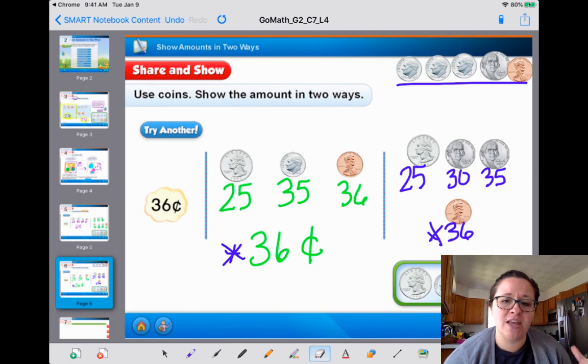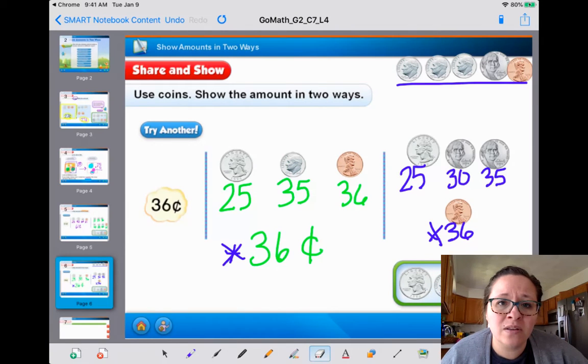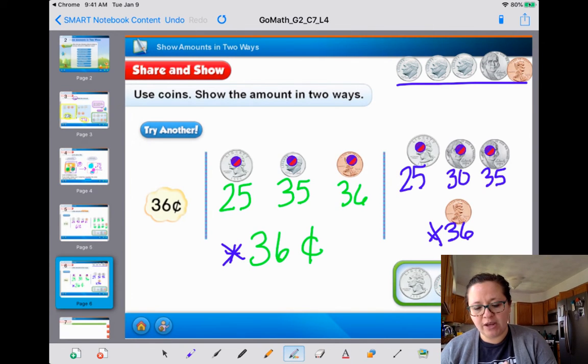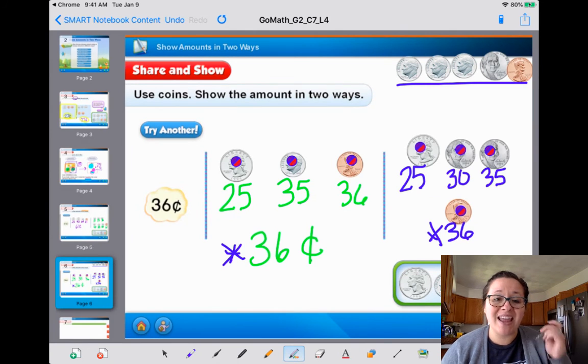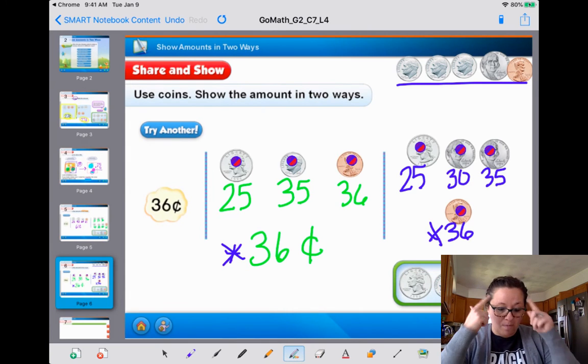And I also want you to see that you can have the same number. You can have the same amount of change. Look at, this person has one, two, three coins. This person has one, two, three, four coins. That doesn't always mean the second way is a larger amount of money. It doesn't always mean that. They have the same amount of money. One person has more coins than the other. So, no worries. I want you to just remember that for me.